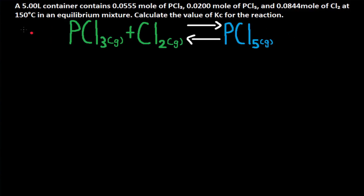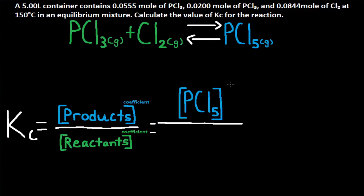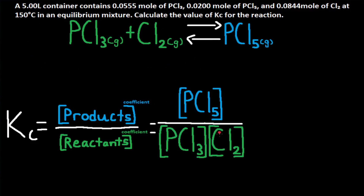First, let's tackle this problem. What I'd like to do is skip to what the question is asking. It's asking us to calculate the value of Kc for the reaction. Kc is equal to concentration of products divided by concentration of reactants, and coefficients become exponents. For this reaction, Kc is equal to PCl5 divided by PCl3 and Cl2. They have no coefficients, so they have no exponents.